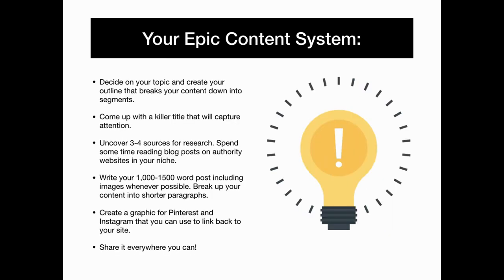Your epic content system: first decide on your topic and create your outline, then come up with a killer title that will capture attention immediately. Uncover three or four sources for research and spend some time reading blog posts on authority websites. Write a 1,500 word post including images whenever possible, break up your content into shorter paragraphs. Create a graphic for Pinterest and Instagram that you can use to link back to your website, and then share it everywhere you can.